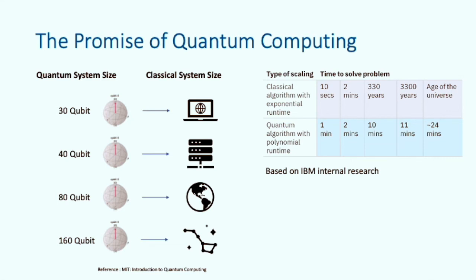The table on the right from IBM Research compares the time taken for a classical algorithm with exponential runtime and compares that with an equivalent quantum solution with polynomial runtime. If the classical algorithm with exponential runtime takes 10 seconds to execute, then the equivalent quantum algorithm would take 1 minute. If the problem size is increased so that the classical algorithm now takes 2 minutes, the equivalent quantum algorithm would also take 2 minutes. If we increase the problem size again so that the classical algorithm now takes 330 years, the quantum equivalent would only take 10 minutes. Increasing again so that the classical problem takes 3,300 years, the quantum problem takes 11 minutes. Increasing the problem to the point where the classical algorithm would take all of the time in the universe, the quantum algorithm would still only take 24 minutes. From this you may get a sense of why many people are very excited about the potential for quantum computing.